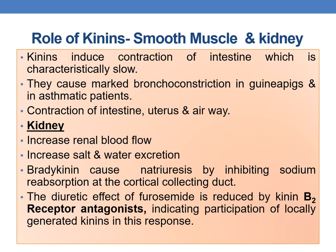Coming to the role of kinins in smooth muscle and kidney: kinins induce contraction of the intestine, which is characteristically slow, and they cause marked bronchoconstriction in guinea pigs and asthmatic patients. The overall actions on smooth muscles include contraction of the intestine, uterus and airway. In the kidney, kinins increase renal blood flow and increase salt and water excretion. Bradykinin specifically causes natriuresis by inhibiting sodium reabsorption at the cortical collecting duct. The diuretic effect of furosemide is reduced by B2 receptor antagonists, indicating participation of locally generated kinins in this response.